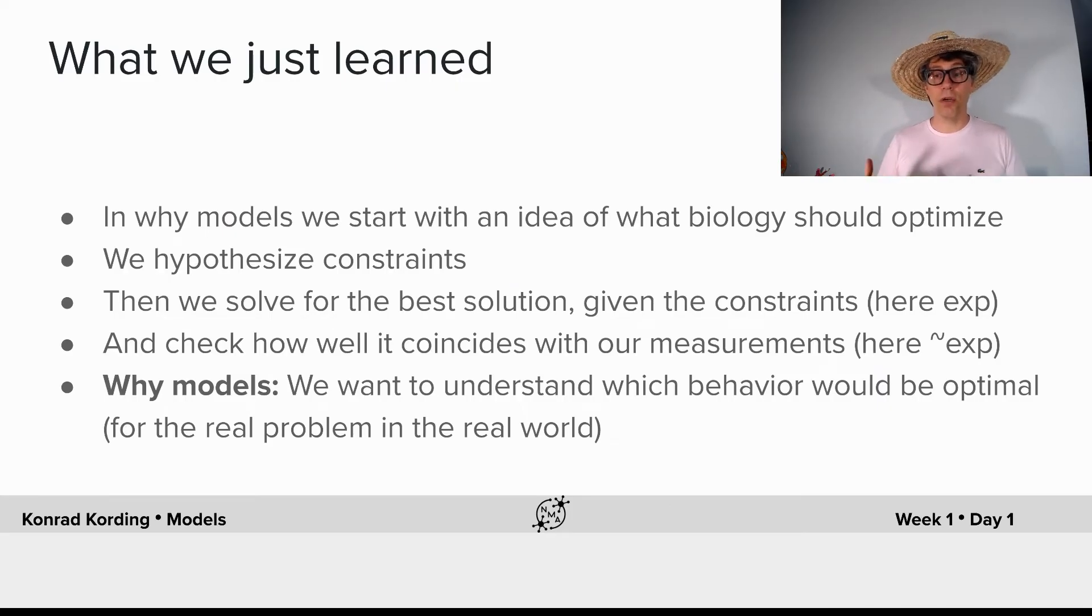Here, the fact that real neurons seem to roughly have exponential distributions of interspike intervals. So when we have a Why model, we want to understand which behavior would be optimal for the real problem in the real world.